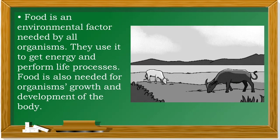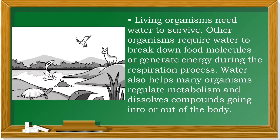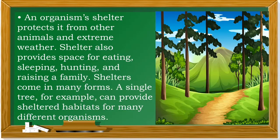Food is an environmental factor needed by all organisms. They use it to get energy and perform life processes. Food is also needed for organisms' growth and development of the body. Living organisms need water to survive. Other organisms require water to break down food molecules or generate energy during the respiration process. Water also helps many organisms regulate metabolism and dissolves compounds going into or out of the body. An organism's shelter protects it from other animals and extreme weather. Shelter also provides space for eating, sleeping, hunting, and raising a family. Shelters come in many forms — a single tree, for example, can provide sheltered habitats for many different organisms.